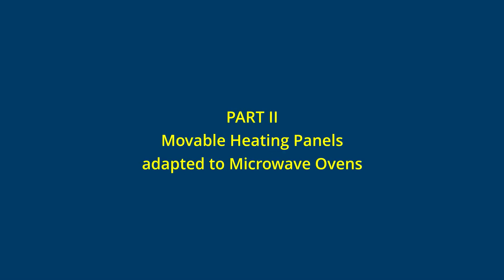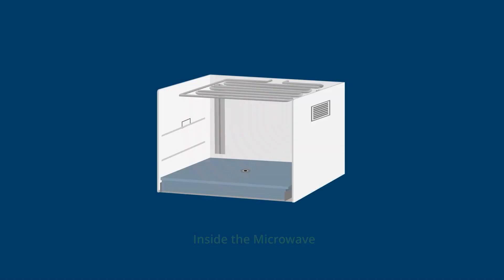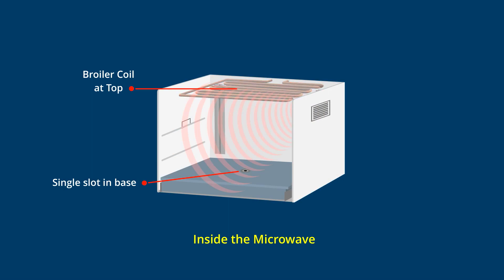Part 2: Movable heating panels adapted to microwave ovens. Microwave ovens have a single rotating slot at the base, a broiler coil on top, and most importantly, a magnetron.